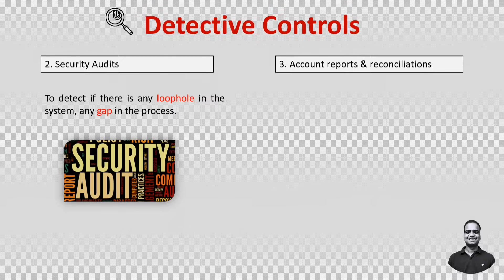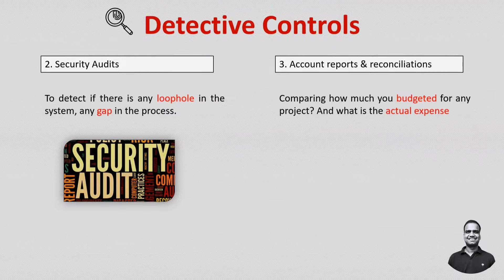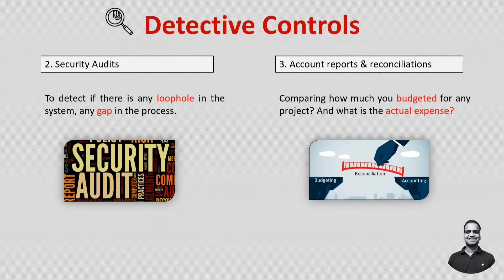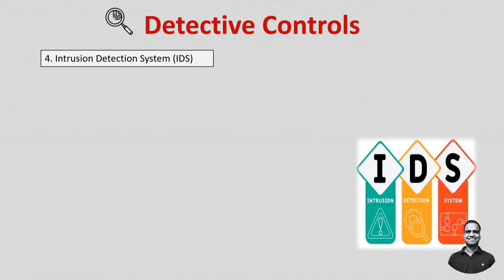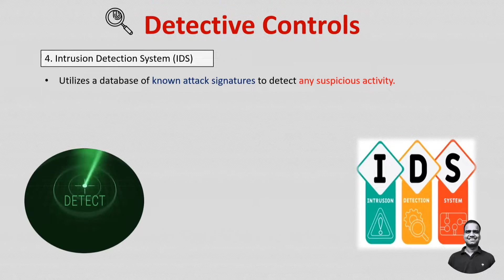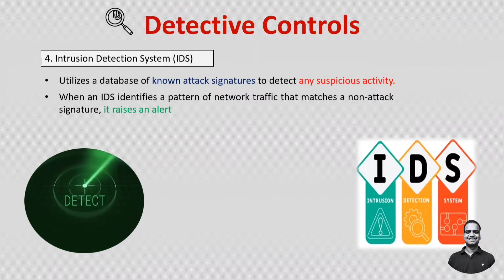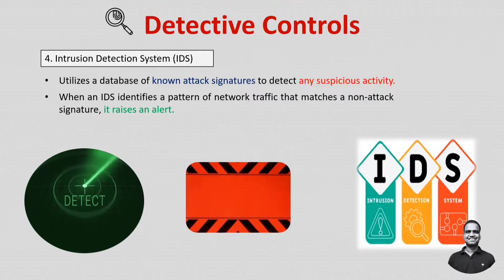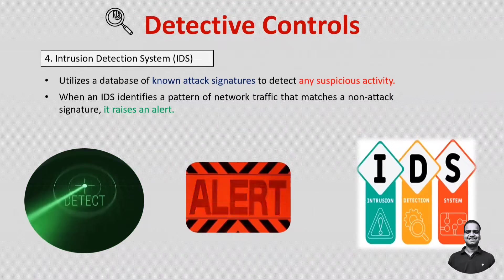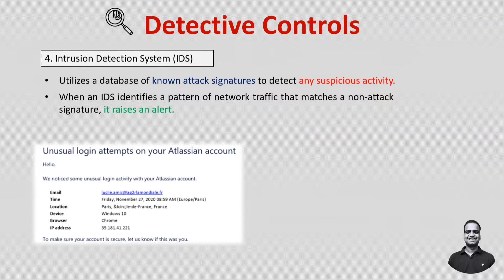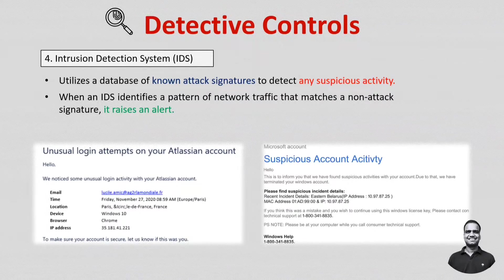Account reports and reconciliations — such as comparing budgeted versus actual expenses for a month, year, or project — are detective controls. Intrusion Detection Systems (IDS) are also detective controls, using a database of known attack signatures to detect suspicious activity. When IDS identifies a matching pattern in network traffic, it raises an alert. It can also detect deviations from normal behavior, such as a user accessing sensitive files at an unusual time or from an unusual location.